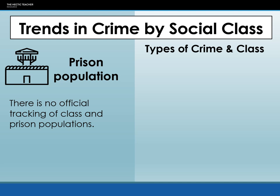For example, if you're using household income as your system of defining class, someone might be considered middle class or working class because of how much money they bring into the home. If you're using educational level, they may not be bringing in that much money but they have a high level of qualification — so are they working class or middle class? There is no official government-level system for saying this is working class, this is underclass, this is middle class, this is upper class — these are the criteria you need to meet.